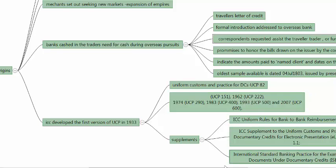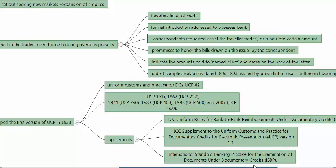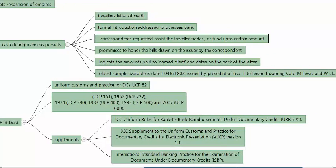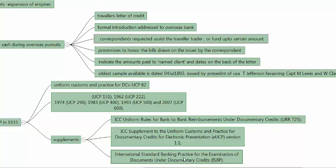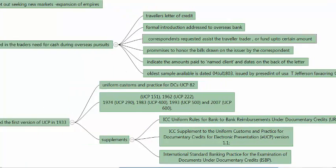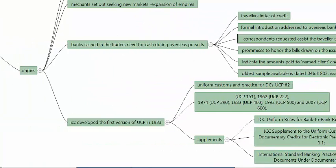There are other supplements to the Uniform Customs and Practices. The guidance issued by the ICC includes: the Rules for Bank-to-Bank Reimbursements, URR 725; the ICC supplement to UCP, that is eUCP for electronic presentation; and we also have the ISBP — International Standard Banking Practices.